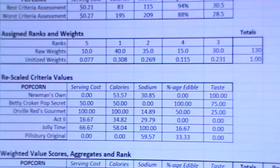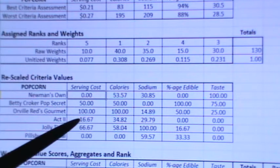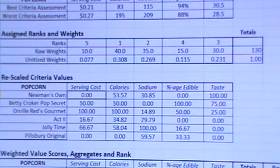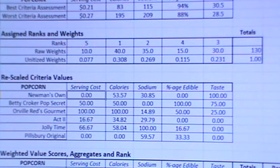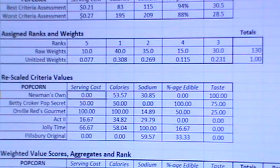Let me show you — this is the formula given to you in the article, and it basically takes the original price or cost of Newman's Own, subtracts it from the best cost, and comes up with zero. That's what this formula at the top is — exactly the formula discussed in the reading for the week. Each of these were created using that formula, which rescales everything so that zero is the worst and 100 is the best.